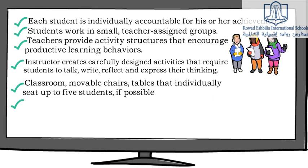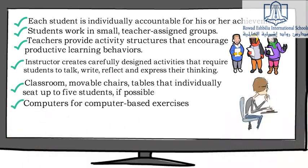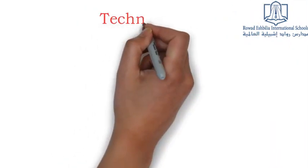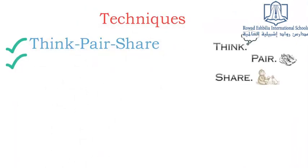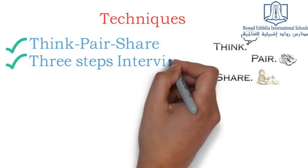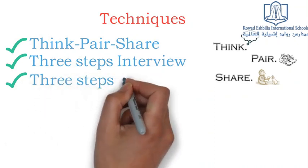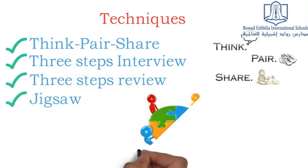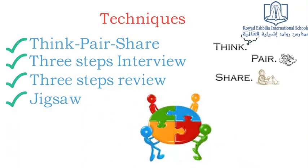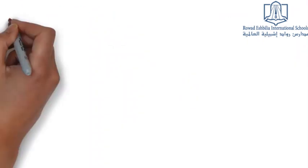The classroom should have movable chairs and tables that individually seat up to five students, and computers for computer-based exercises if possible. Techniques include: Think Pair Share, Three Steps Interview, Three Steps Review, and Jigsaw.